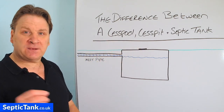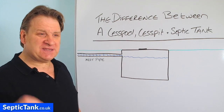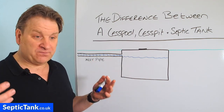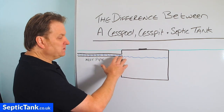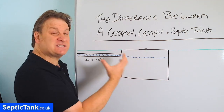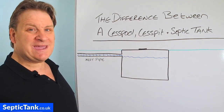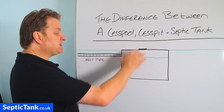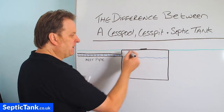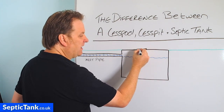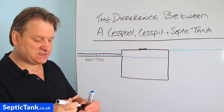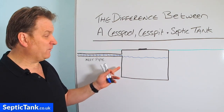Cesspools are good and bad. They're good in the sense that if you want to protect the environment from sewage pollution, then once the tank is full and it's reached the level of the inlet pipe, it can't escape — it's safe, it's contained within this structure. The only way you can get the liquid out is to get the tank sucked out. You have to get a tanker in; he'll come, take the lid off, put his pipe into the tank and suck all the liquid out. The downside of a cesspool is that once it's full, it will need emptying.